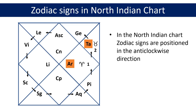Now as mentioned earlier, the positions of the zodiac signs are not fixed in the North Indian chart. So how do we decide where to place them? We first place the zodiac sign of the ascendant in the fixed first house. We then place the other zodiac signs that follow in the subsequent houses in the anti-clockwise direction, as the houses and zodiac signs are positioned anti-clockwise in the North Indian chart.